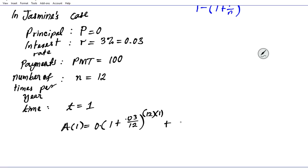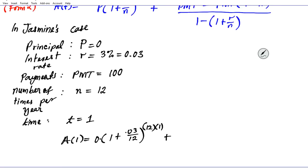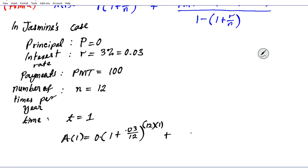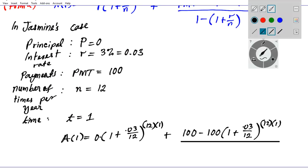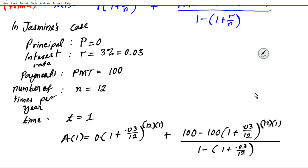All that's left is the right side, which is the growth of the contributions. We're using Form 2 as indicated earlier. We have the payment, 100, minus the payment times (1 + 0.03/12)^(12×1), divided by [1 - (1 + 0.03/12)]. If you look at the options provided here, the problem is not evaluated completely - it's a partial solve.